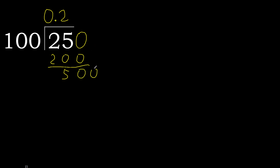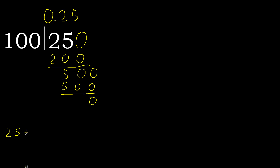There is no number, therefore complete — always complete with 0. Point is here, ok: 0 point. 500. 100 multiplied by 5 is 500, is not greater. Subtract: 0. Therefore, finish: 25 divided by 100 is 0.25.